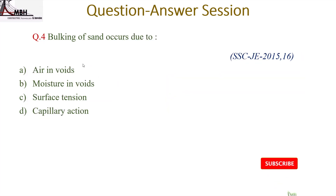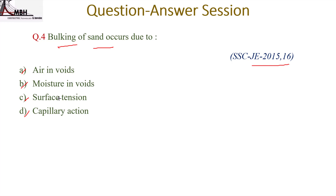Next question: bulking of sand occurs due to — option: air in voids, moisture in voids, surface tension, or capillary action? This question was asked in 2015 and 2016. The moisture content forms a film of water around the sand particles, which exerts surface tension and keeps the particles apart from each other. So the main reason for bulking of sand is moisture in voids. The correct option is moisture in voids.